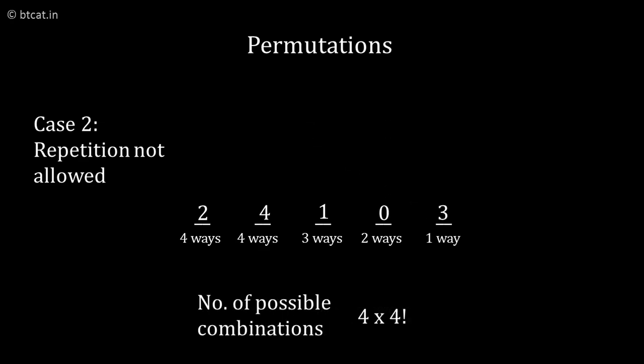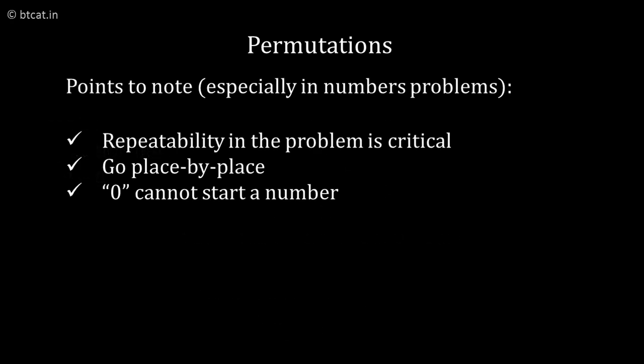The first digit can come in 4 ways. Why? Because 0 cannot start the number. The next place can come in 5 ways and again in 5 ways and so on.